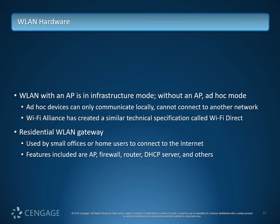A wireless LAN with an AP is in infrastructure mode. Without an AP it's called ad hoc mode. Ad hoc devices can only communicate locally — they cannot connect externally because there's no device to pass things into a gateway. The Wi-Fi Alliance has created a specification called Wi-Fi Direct, similar to ad hoc mode. If you use AirDrop or Android Beam, they often use Wi-Fi Direct for data transmission, while NFC or RFID is often used for authentication first.